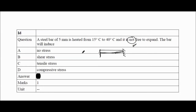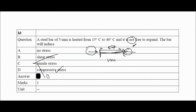The bar is fully fixed at both ends. When it is heated, it will tend to expand. Because it tries to expand, the walls provide a reaction force opposing that expansion. Since the wall opposes the expansion, the nature of the stress induced is compressive. Therefore the answer is D — compressive stress.